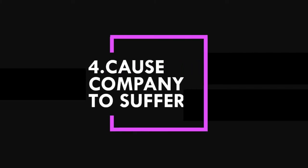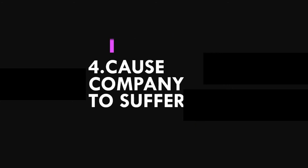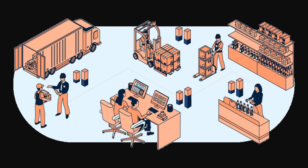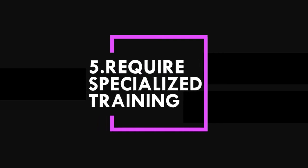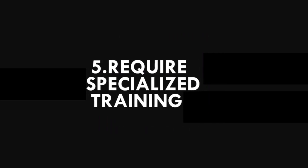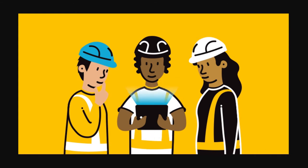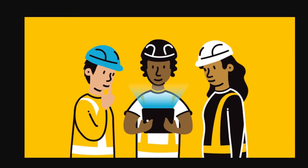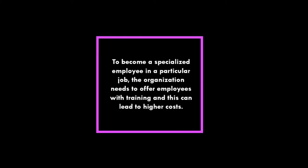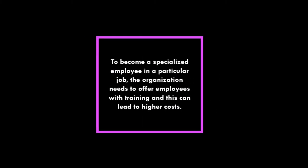The fourth disadvantage is that the company suffers. If the company is performing well due to an expert working in the category, the absence of that employee may affect the company's performance and the company may suffer over time. The fifth disadvantage is requiring specialized training. Even though a worker possesses specialized skills, in order to become a permanent employee, the organization needs to offer training, and this can lead to higher costs.